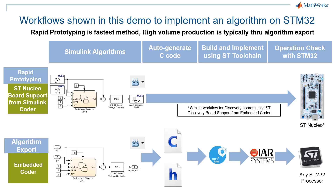The algorithm export option uses the same Simulink algorithm model, but instead of peripheral blocks, input and output port blocks are used to pass data in and out of the generated C function. The automated build process results in C and H files that can then be included in the existing hand code and deployed to any STM32 processor using a standard toolchain, such as CubeMX and IAR Embedded Workbench.